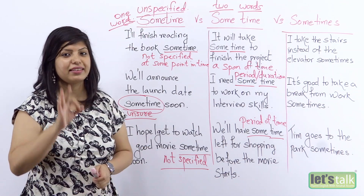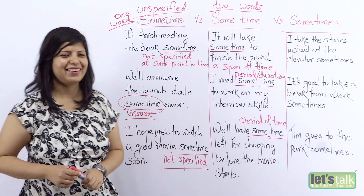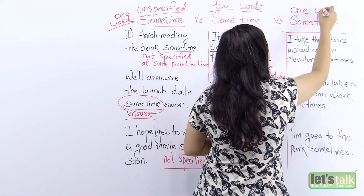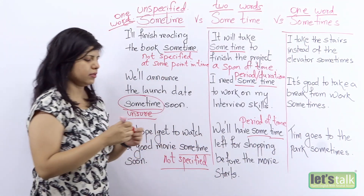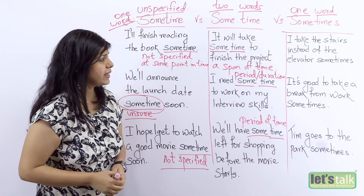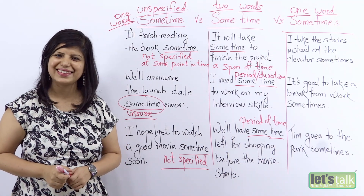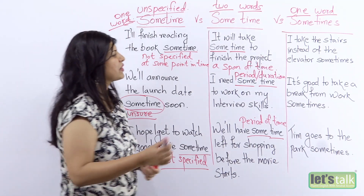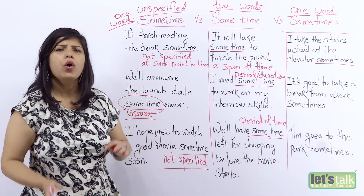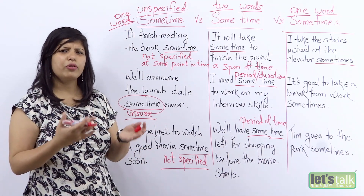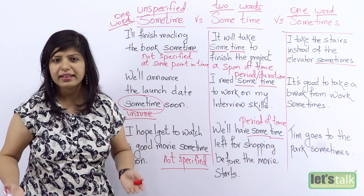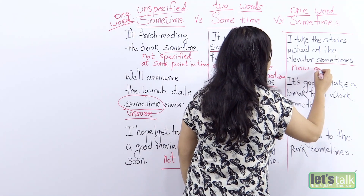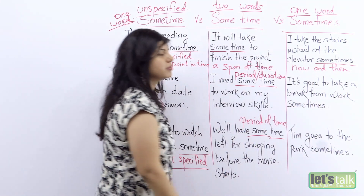And now we have the third word: sometimes — one word. Let's see how to use it. 'I take the stairs instead of the elevator sometimes.' This means that occasionally, now and then, instead of going by the elevator, I use the stairs to keep myself healthy, to do some exercise. So 'sometimes' basically means now and then.